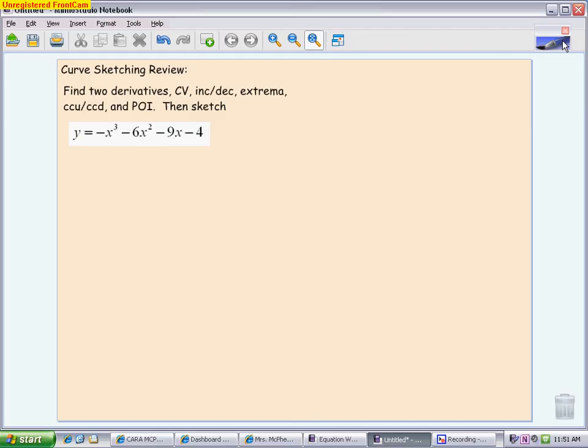We're going to go through an entire curve sketching example. This is the type of problem that you're going to see on the quiz over 3.4 to 3.6, and also on your chapter 3 test. Each part could be a multiple choice question where they only want one piece of what we're doing. This problem encompasses everything we've talked about in chapter 3 to this point.